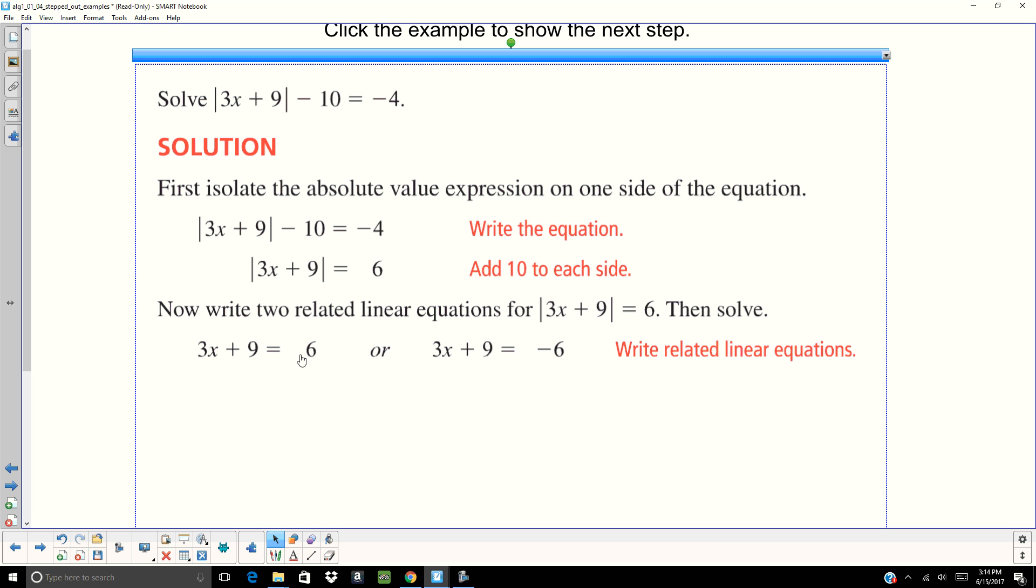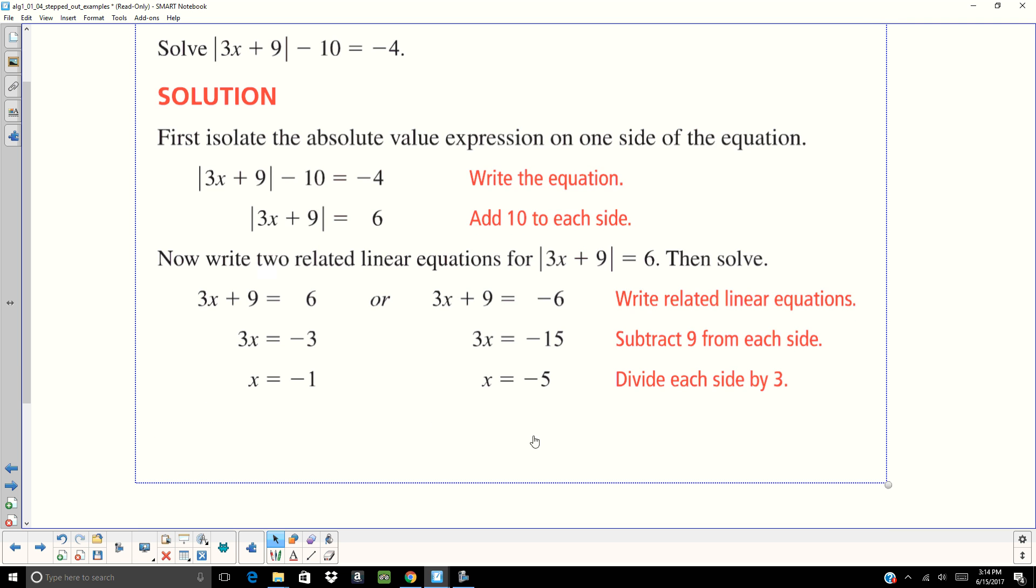Now I'm going to set up my two equations. 3X plus 9 equals positive 6. 3X plus 9 equals negative 6. Subtract 9, divide by 3, and I get X equals negative 1. Do the same thing on the other equation. And I'm going to get X equals negative 5. Notice, you're not always going to get the same number. In fact, most cases you are not going to get the same number. So your solutions are negative 1 and negative 5.